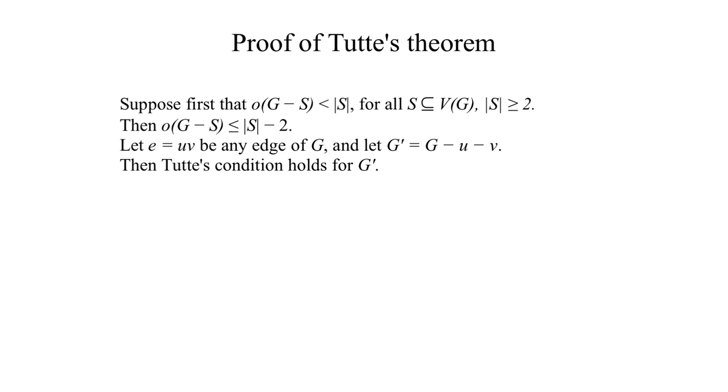Let E equals UV be any edge of G, with nodes U and V, and consider the graph G prime equals G minus U minus V. Then Tutte's condition holds for G prime.